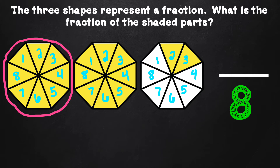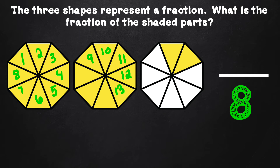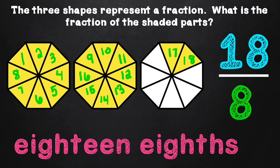That number will be the denominator. Now we are going to determine or figure out the numerator. When we figure out the numerator, we are counting all of the pieces that are shaded, including those in other octagons. So let's start counting: one, two, three, four, five, six, seven, eight, nine, ten, eleven, twelve, thirteen, fourteen, fifteen, sixteen, seventeen, eighteen. Since there are a total of eighteen pieces or parts that are shaded, the number eighteen goes in the numerator because it represents the total number of pieces or parts shaded in all of the objects. The fraction for the shaded parts is eighteen-eighths.